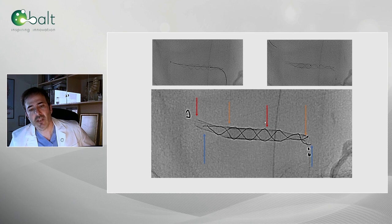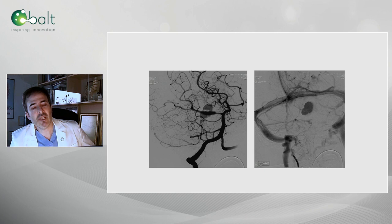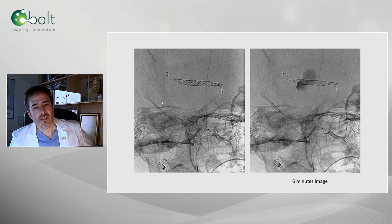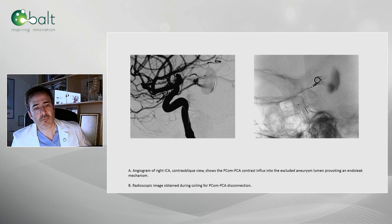On red, the ends of the more distal one. On orange, the ends of the second one. This is the immediate result. You can see here some white stuff that is in fact the entrance of blood through the carotid. This is the construct. This is the stagnation of contrast into the aneurysm, obtained after six minutes of angiographic imaging.